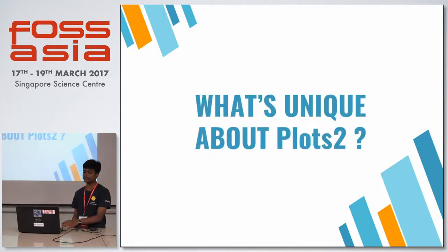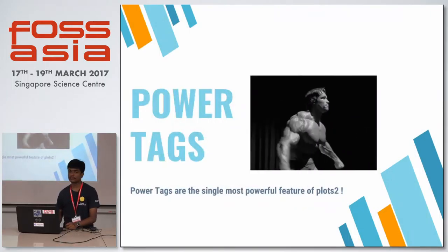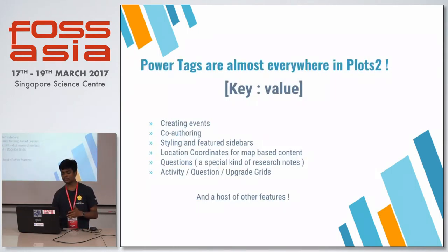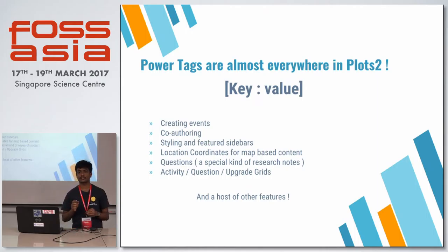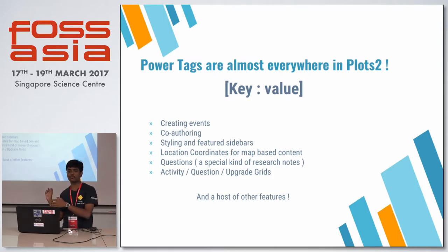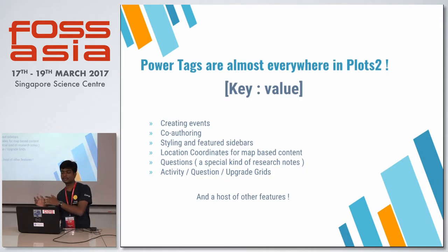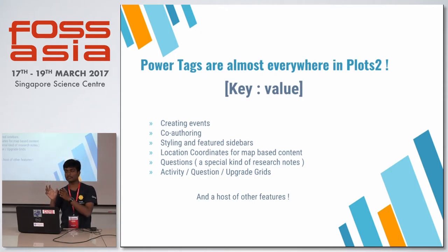What's unique about this project compared to other content management systems is the power tags. Power tags are the most powerful feature of the CMS. They are common tags used anywhere in the CMS, but they use a special key-value format where the key explains the feature being described. For example, if you want to write a question with extra features, we have a specially designed power tag: whenever you put a tag like 'question:some-name', it differentiates it from a normal research note and labels it as a question.